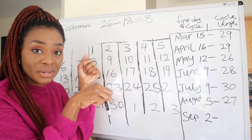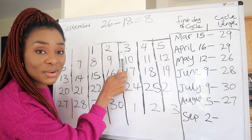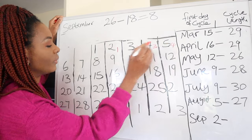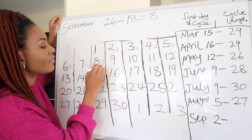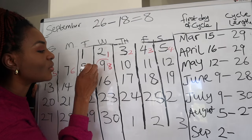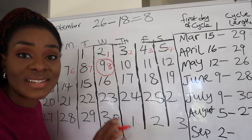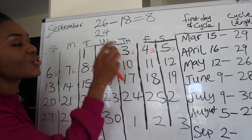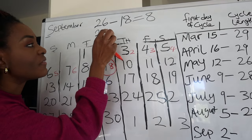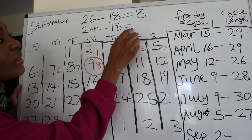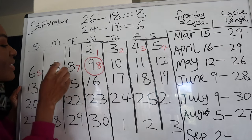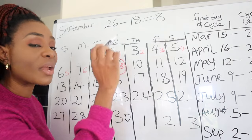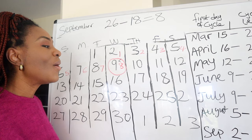So 26 minus 18 equals 8. Starting from the first day of your period — September 2nd — count forward 8 days: 1, 2, 3, 4, 5, 6, 7, 8. Circle that date on your calendar. That day is the beginning of your fertile window. For example if the shortest cycle was 24 days: 24 minus 18 equals 6, so you'd circle day 6.